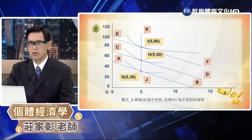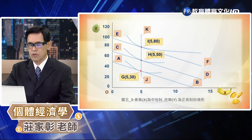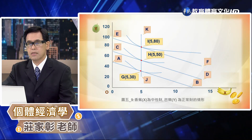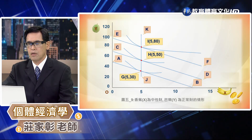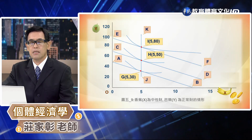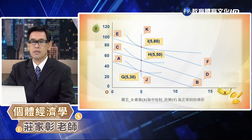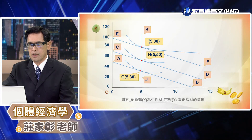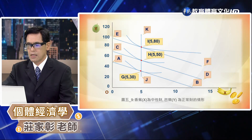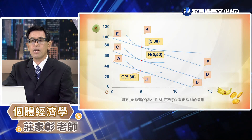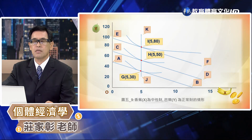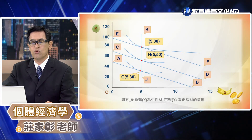接下來我們來看中性品的情況。中性品是代表說所得水準提高但是消費數量不變，如圖5-9所示。我們可以看到所得水準從 AB 增加到 CD 再增加到 EF 的時候，巴勒的消費數量是在增加，所以巴勒在這個情況下是一個正常品；但是香蕉的消費數量都維持在5單位，所以這表示香蕉在這種情況下是一個中性品，不會隨著所得水準提高來增加消費數量。